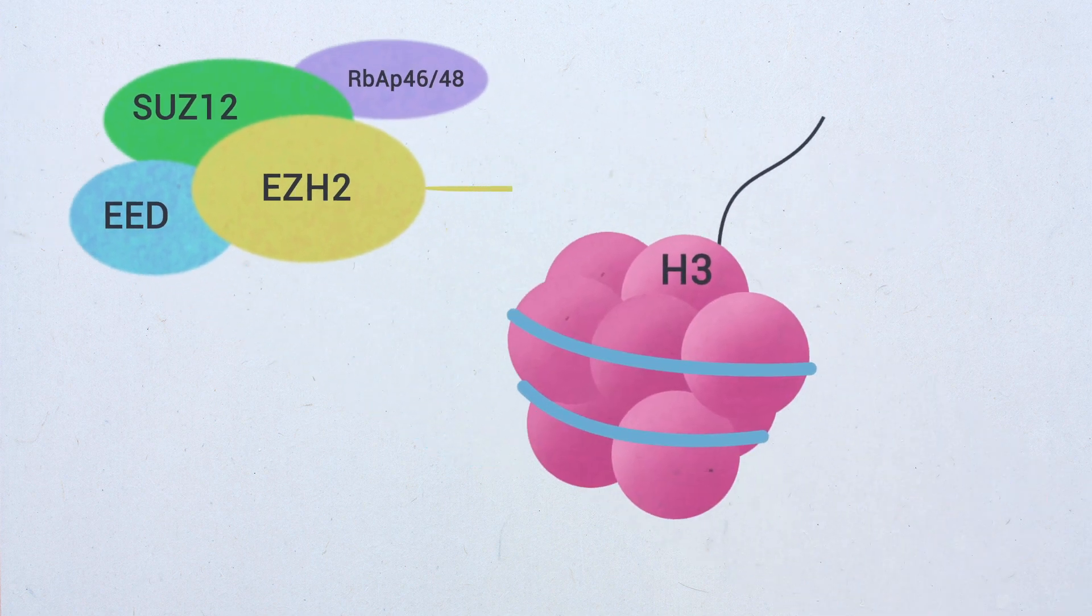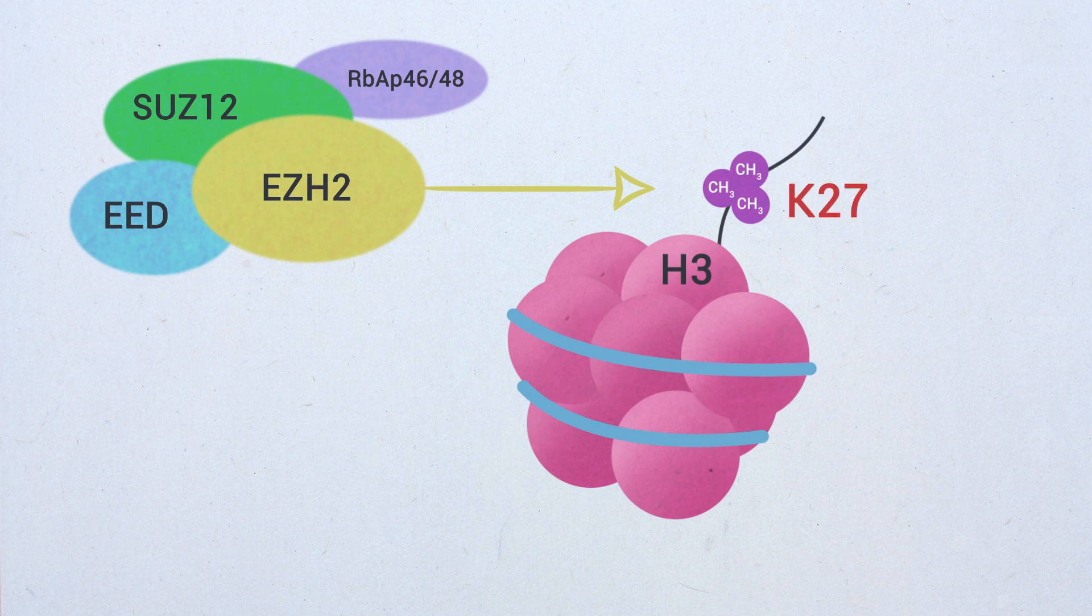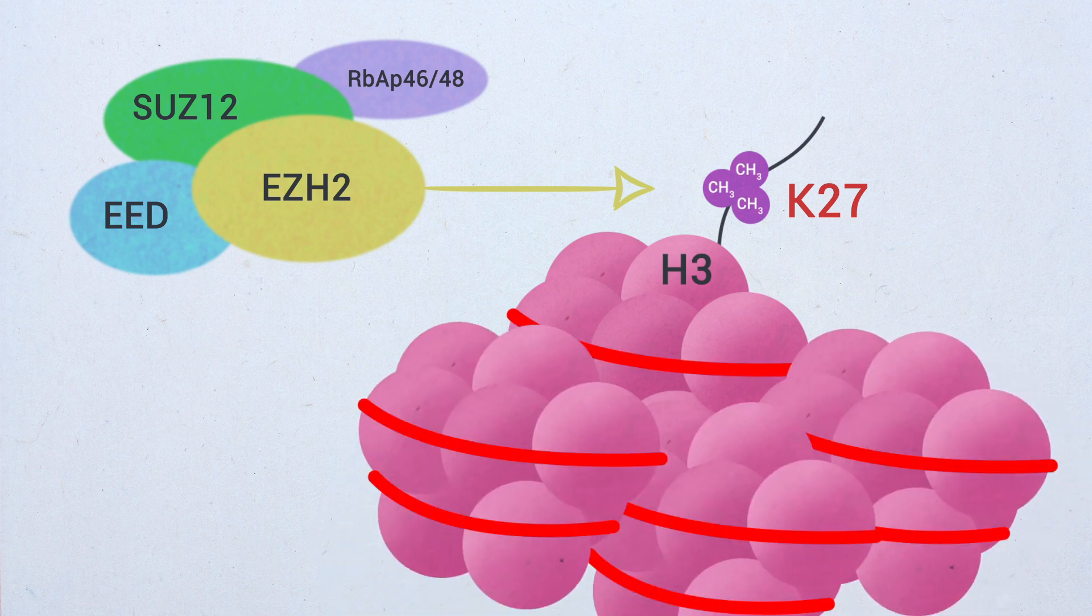EZH2 catalyzes the trimethylation of histone H3 at lysine 27, a repressive marker ultimately resulting in transcriptional silencing through chromatin compaction.